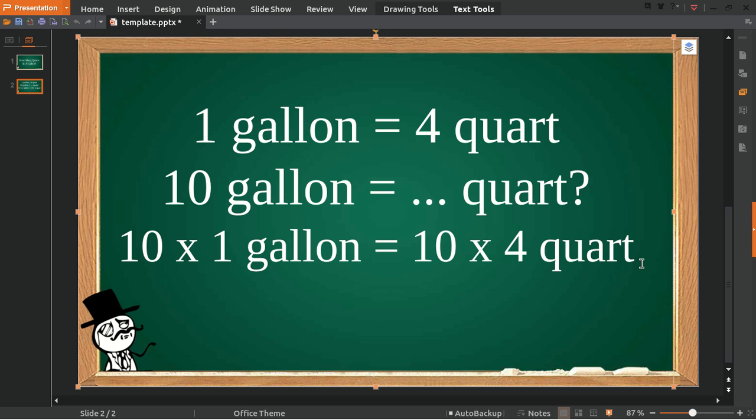Okay, now 10 gallons is equal to 10 multiplied with 4, is equal to 40 quarts.